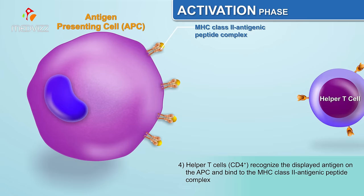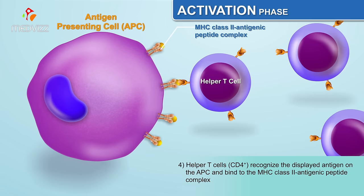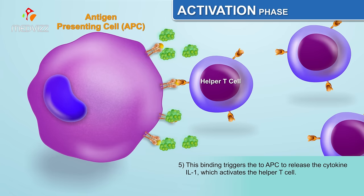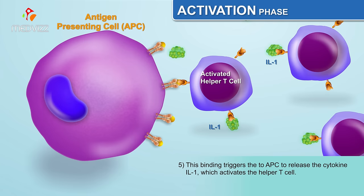Helper T cells (CD4+) recognize the displayed antigen on the APC and bind to the MHC class 2 antigenic peptide complex. This binding triggers the APC to release the cytokine IL-1, which activates the helper T cell.